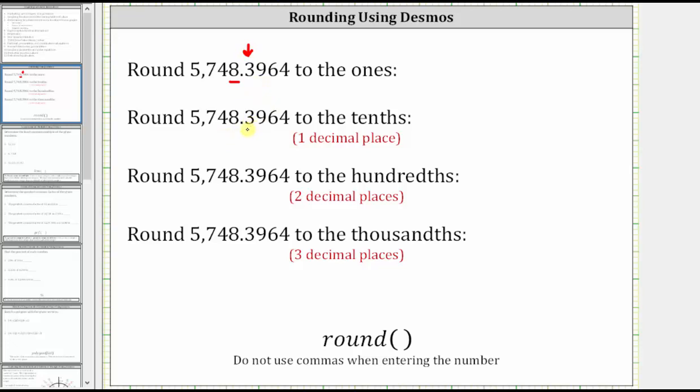The three is in the tenths place value because of the nine to the right we round up. The nine is in the hundredths place value because of the six to the right we round up.